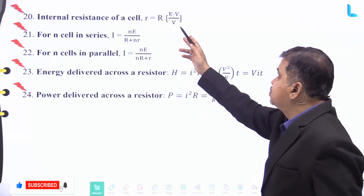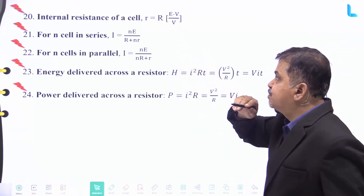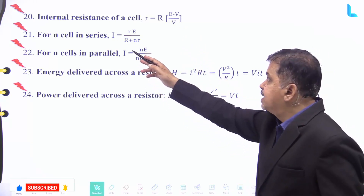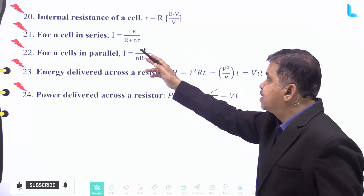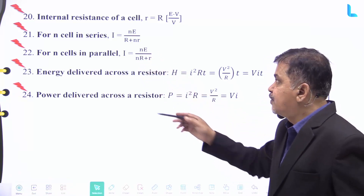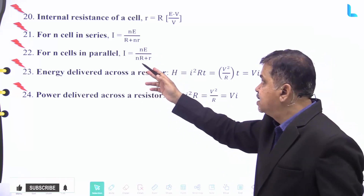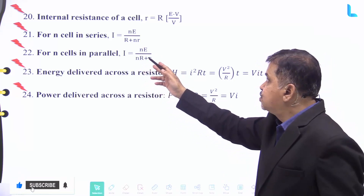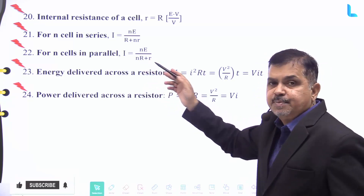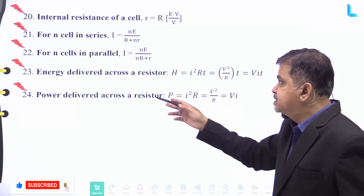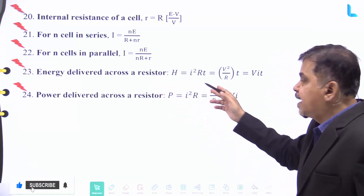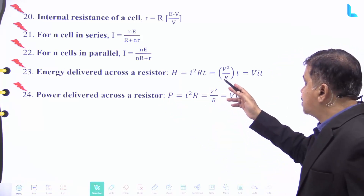The internal resistance of a cell r is given by R × (E − V) divided by V. For N cells connected in series, I equal to N × E divided by (R + Nr). For N cells in parallel, the current I is given by E divided by (R/N + r).